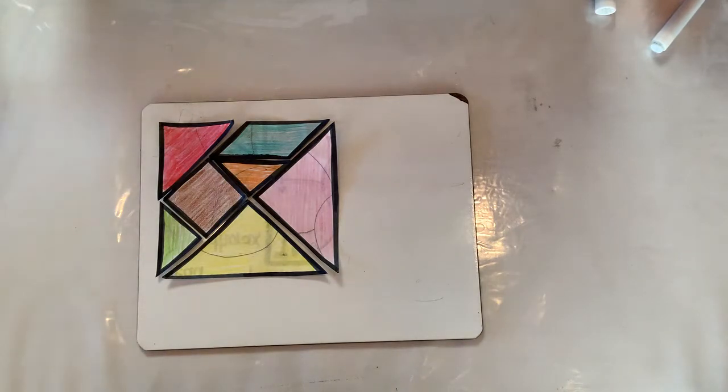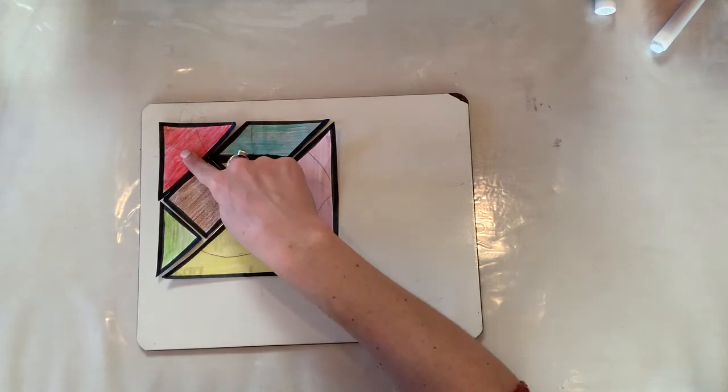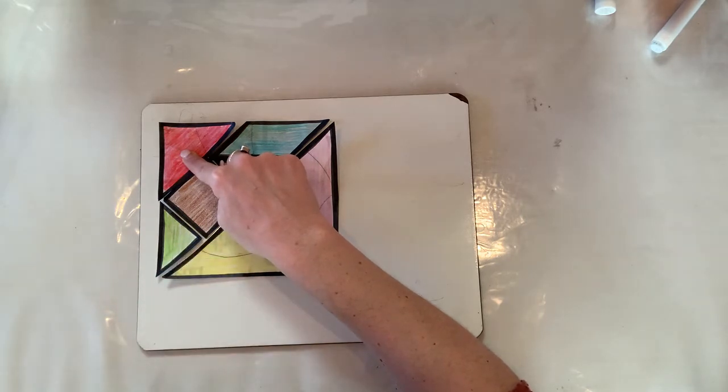All right, so now that you have it all cut out, it says you are going to identify the polygon, that's a fancy word for shape, labeled in the tangram as precisely as possible. So letter A looks like this. What shape is that? That's a triangle, right? Nice work.